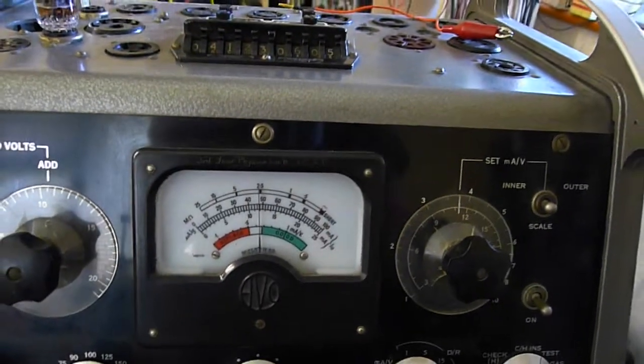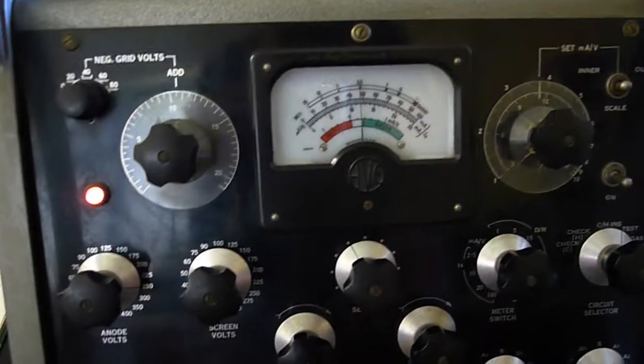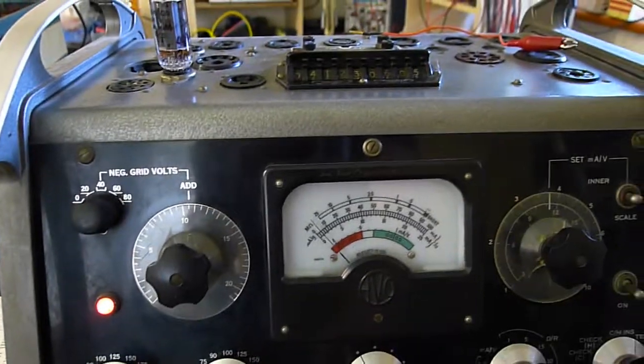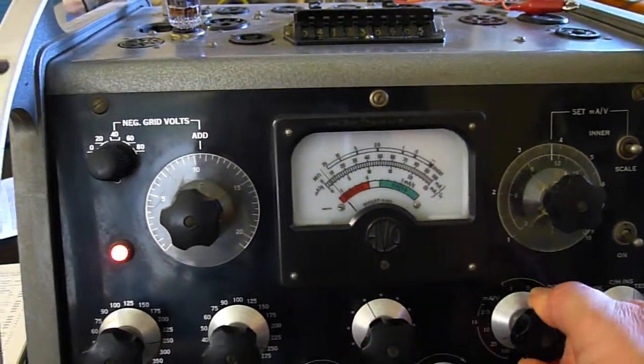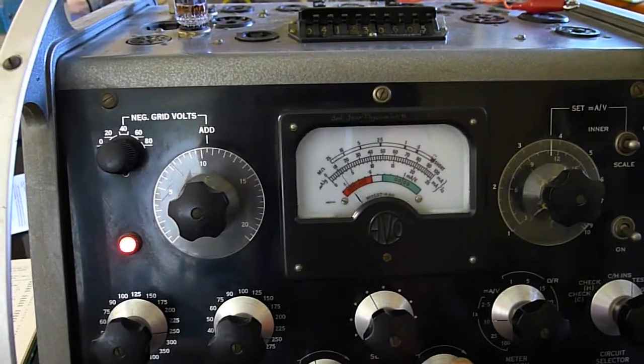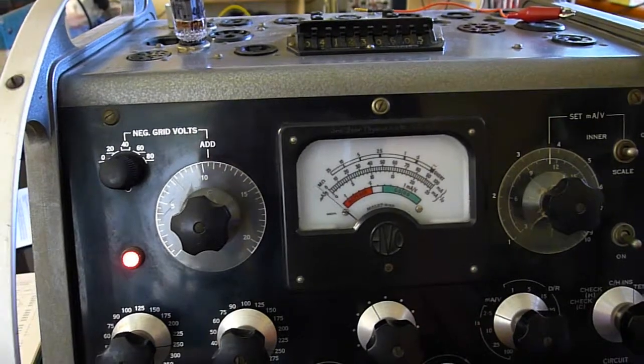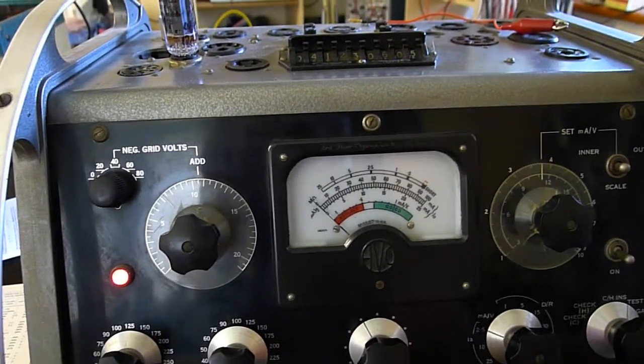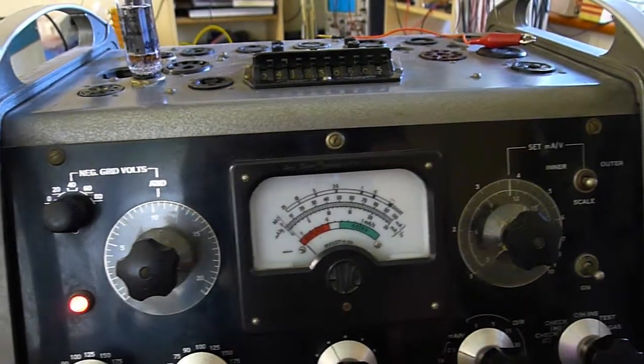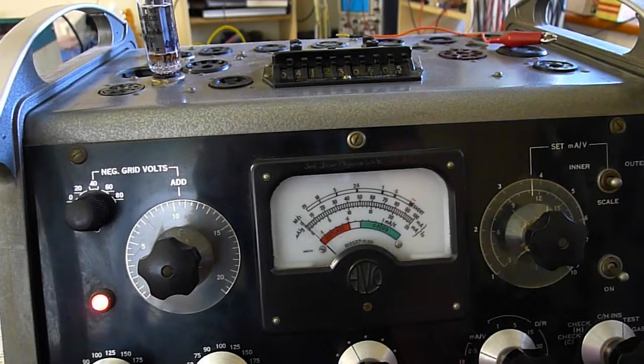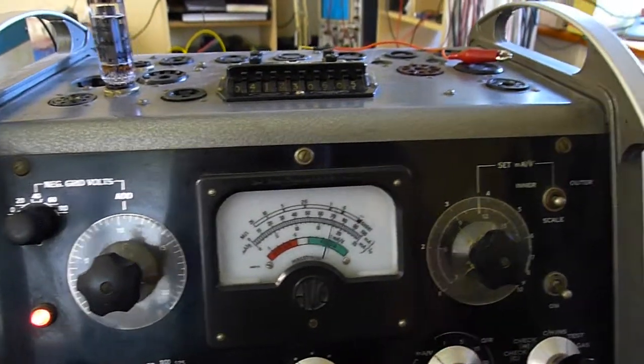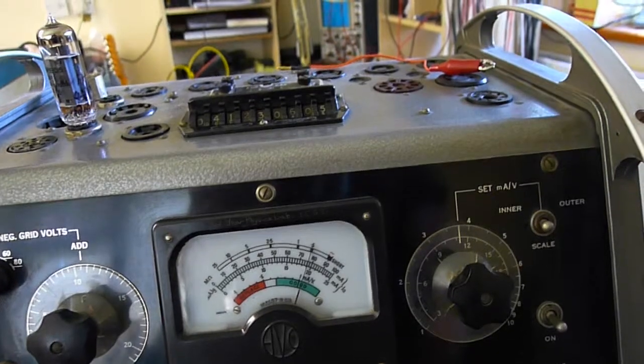Now, to check the milliamps per volt setting, you use these two controls down here to zero the meter. Zero the meter and increase the meter sensitivity here. Increase sensitivity to maximum, put the meter to zero. And then you turn it one more position. There will be a slight drift at these very small figures. Turn it to test.